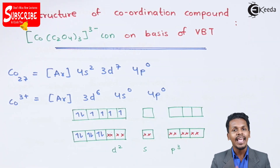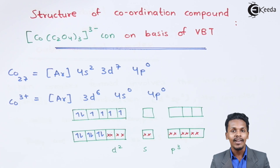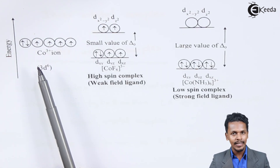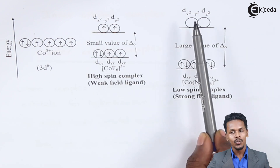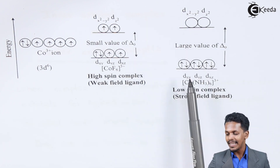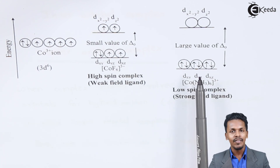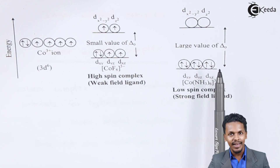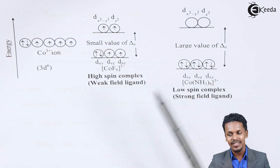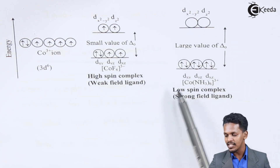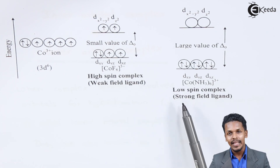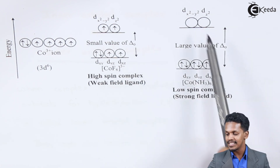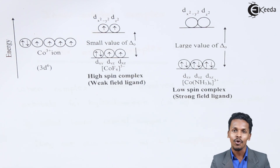Let me explain with the help of the energy diagram so we could understand what inner orbital complex or low spin complex are. This is the energy diagram for cobalt 3+ ions. When it splits into the two energy levels eg and t2g, we are talking about strong field ligands. Whenever a strong field ligand is associated with the metal ion, there will be spin pairing — you can see pairing of electrons at the lower energy level. That's the reason this kind of complex is known as low spin complex, which is only possible if a strong field ligand is associated with the metal ion. This is the inner orbital complex.